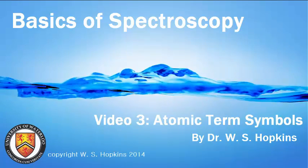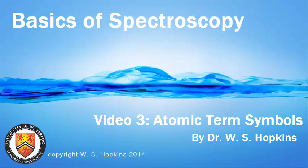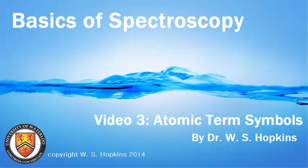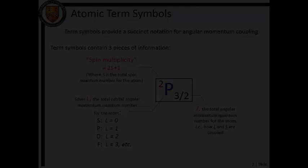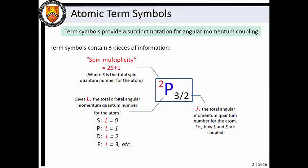Welcome to the Basics of Spectroscopy video series. Let's talk about atomic term symbols. Atomic term symbols provide a succinct notation for summarizing the angular momenta of an atomic system. Term symbols contain three pieces of information.